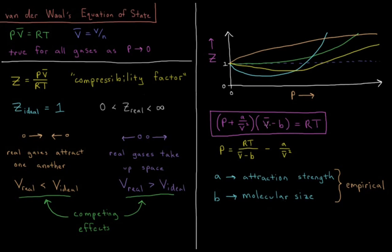As the molar volume goes down, there's effectively a lower limit on how low the molar volume can get because it can't get any lower than B, the amount of space that that amount of gas particles takes up in one mole.